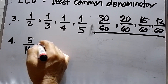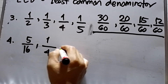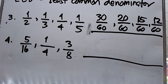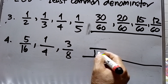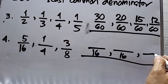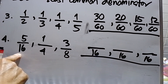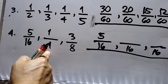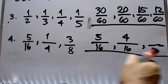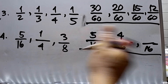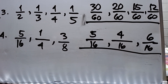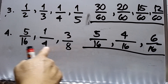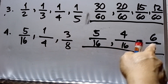Now let's go to number four. I have 5 over 16, one over 4, and three over 8. I will make these similar fractions. The LCD is 16. 16 divided by 16 is 1, times 5 is 5. 16 divided by 4 is 4, times 1 is 4. 16 divided by 8 is 2, times 3 is 6. So the similar fractions are 5 over 16, 4 over 16, and 6 over 16.